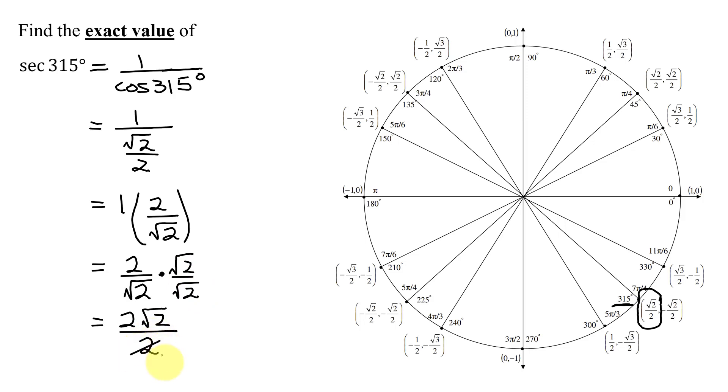And now these 2's reduce, so my answer is just the square root of 2. So the secant of 315 degrees is equal to the square root of 2.